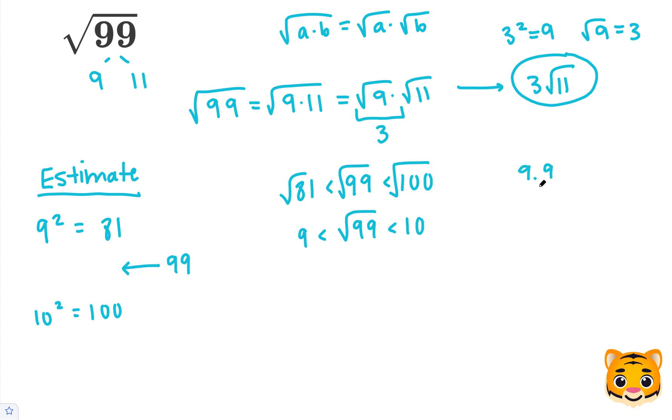We'll try out 9.9 first. We'll multiply 9.9 times 9.9 and see how close we can get to 99. 9 times 9 is 81, carry the 8, and then 9 times 9 is 81, plus 8 is 89, we'll add a 0, and then 9 times 9 is 81, carry the 8, 9 times 9 is 81, plus 8 is 89.